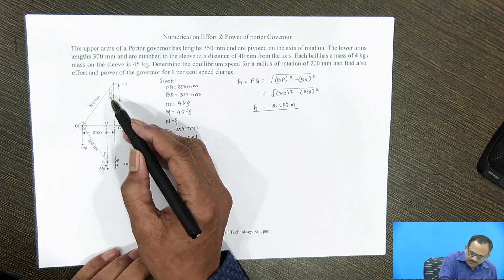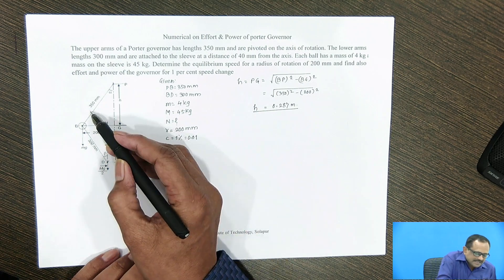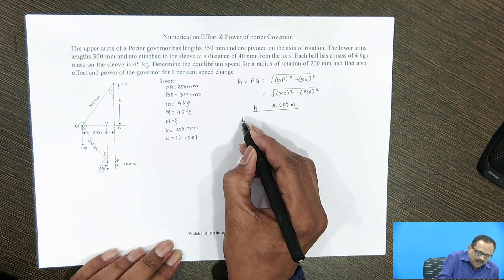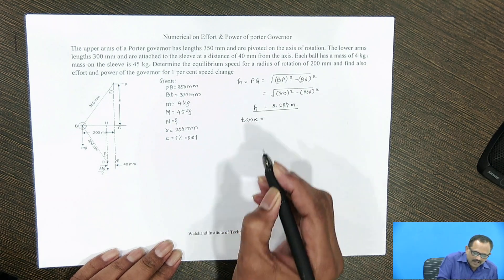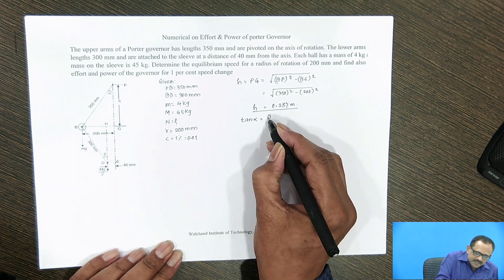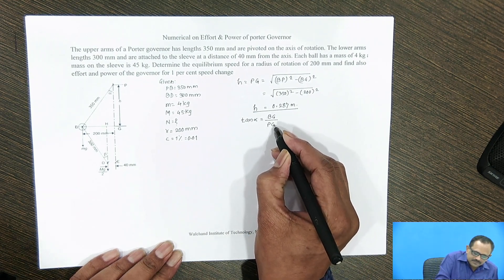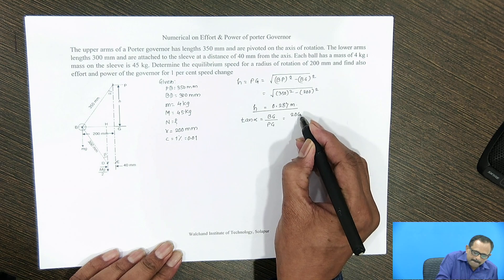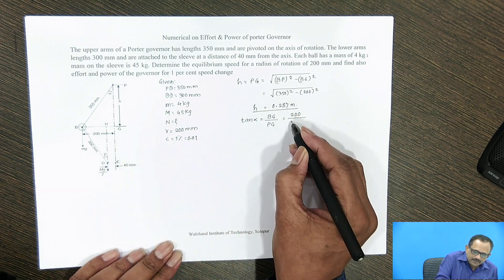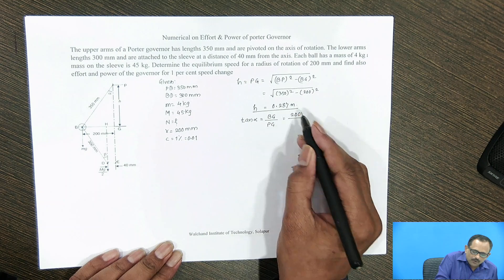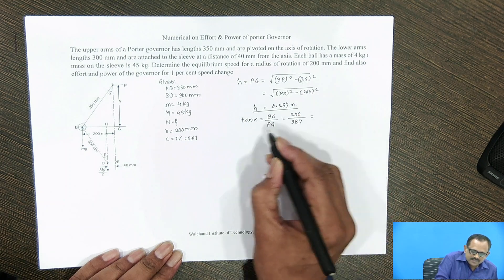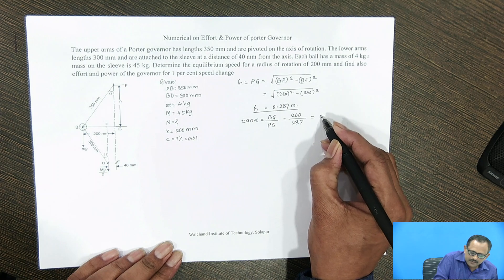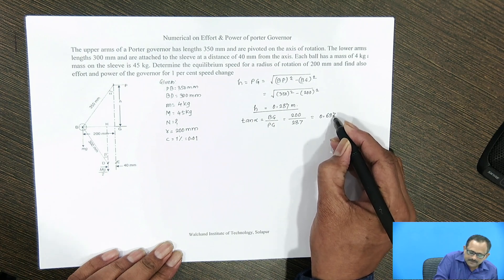Next, we calculate the angle of inclination alpha. From triangle PBG, tan alpha equals the opposite side BG divided by PG. BG is the radius of rotation, 200 mm, and PG, the height, is 287 mm. From this calculation, the value of tan alpha equals 0.697.